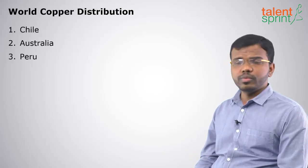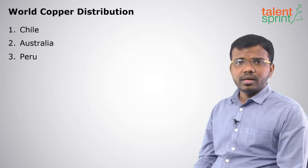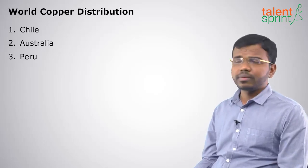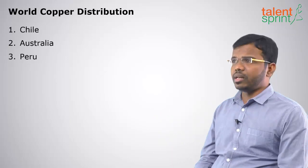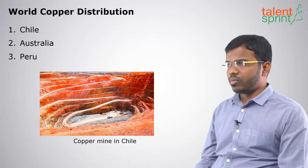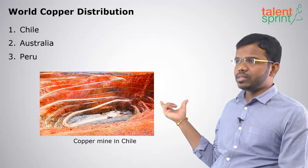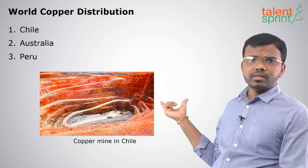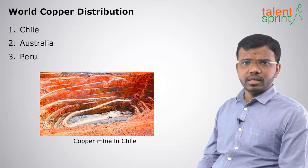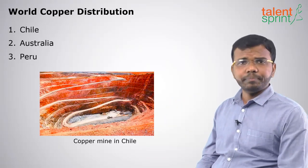Regarding world copper distribution, the highest distribution is in Chile — located in South America, with its capital Santiago. Next is Australia, and then Peru. One of the copper mines in Chile appears somewhat reddish in color, as copper mines are generally reddish. This concludes the topic on copper. We will meet in the next topic. Thank you.